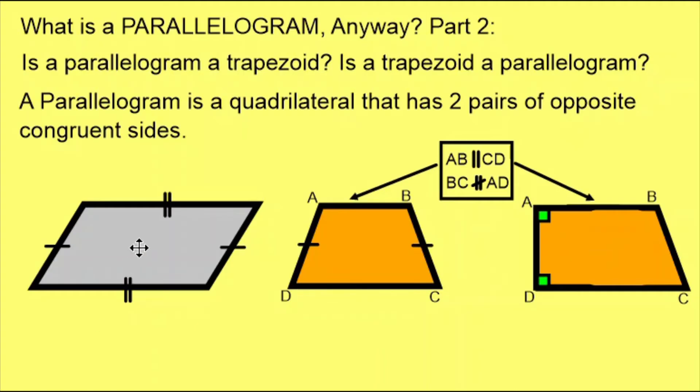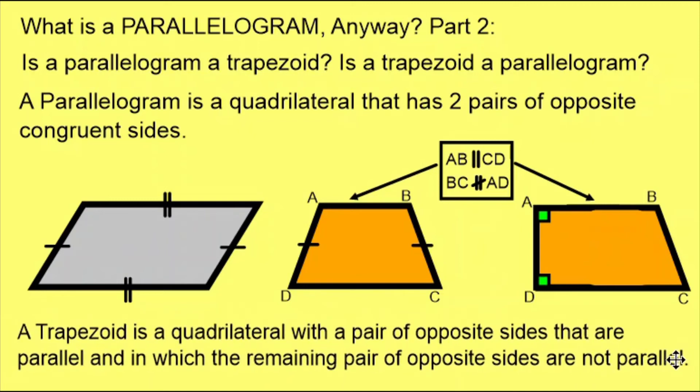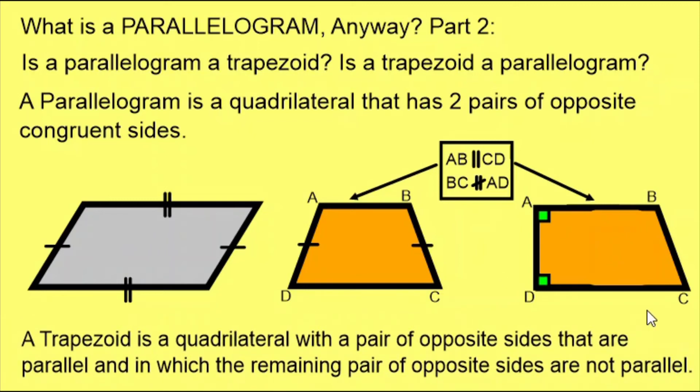What about the parallelogram? Is it also a trapezoid? Let's look at the definition for a trapezoid. A trapezoid is a quadrilateral with a pair of opposite sides that are parallel and in which the remaining pair of opposite sides are not parallel.